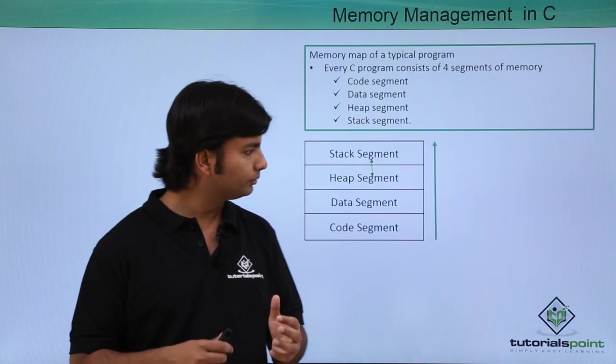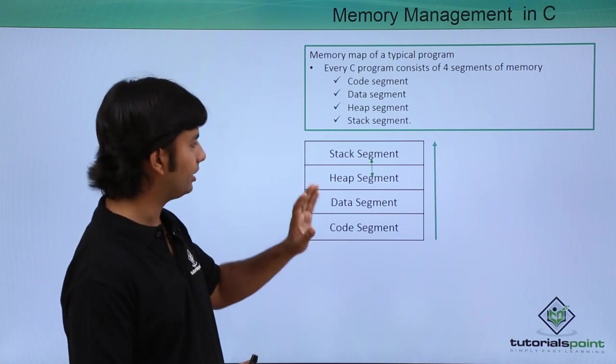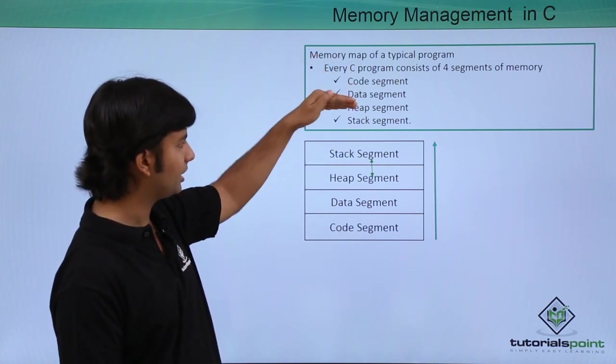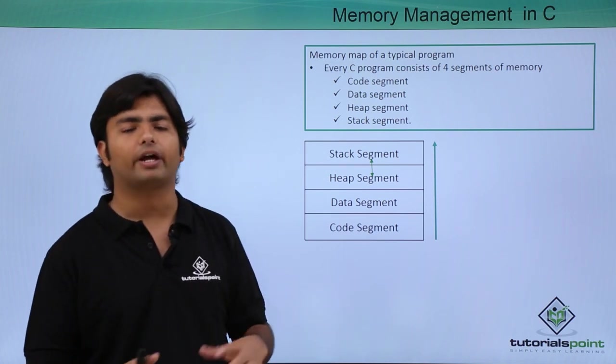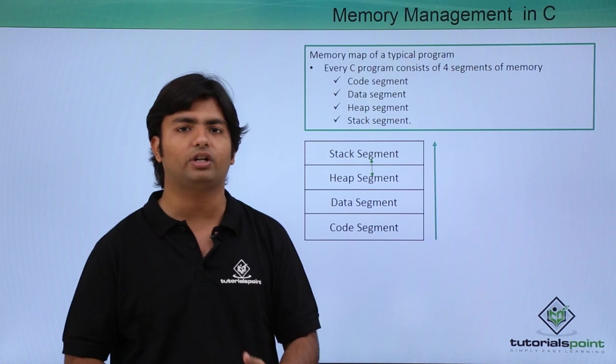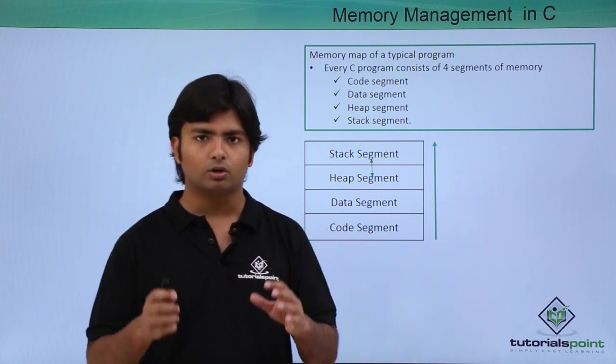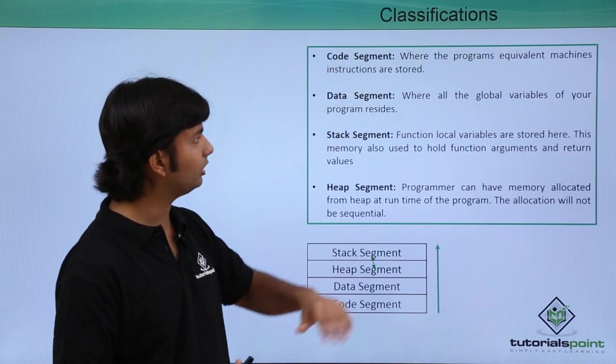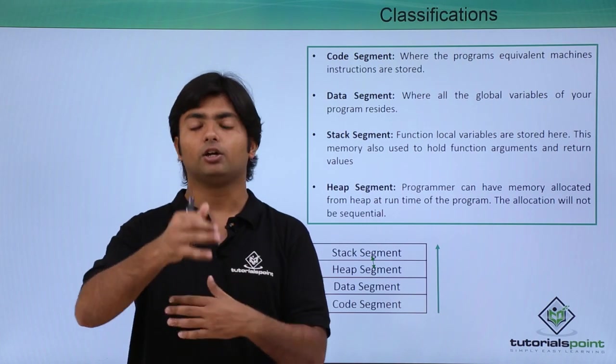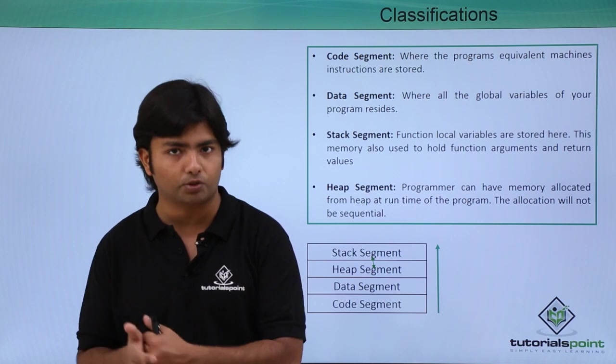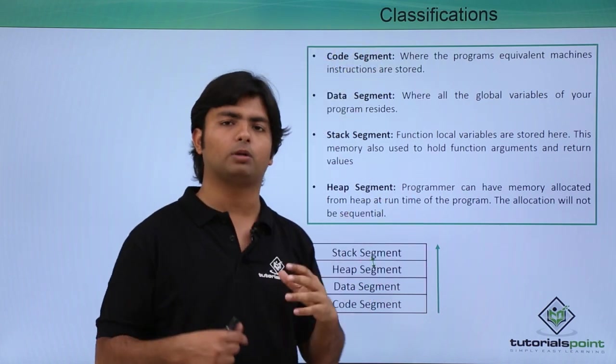Whenever you execute a program written in C, it follows four different memory segments: code segment, data segment, heap segment, and stack segment. The code segment is where the program's equivalent machine instructions are stored. After compilation, there is an object file. When that object file is executed, the instructions are translated into machine code, and those instructions are stored temporarily in this code segment during execution.